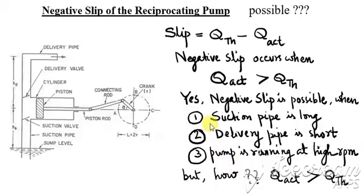Condition number 1: when the suction pipe is long. 2: When the delivery pipe is short. And 3: The pump is running at reasonably high RPM.